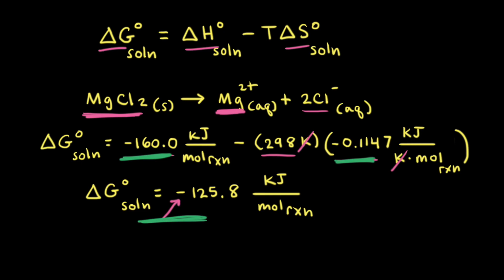Delta G-naught has been negative for both sodium chloride and magnesium chloride, but those are just the two examples chosen for this video. It's certainly possible to get a positive value for delta G-naught of solution, which would mean an insoluble salt. And because it can be very difficult to predict the signs for delta H-naught and delta S-naught for a particular salt, it's even more difficult to predict if delta G-naught is positive or negative. Therefore, it's often necessary to do a calculation to determine the sign of delta G-naught.